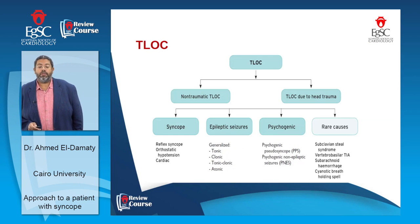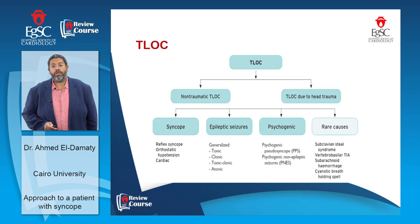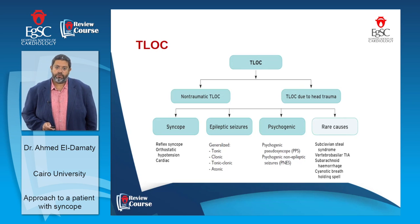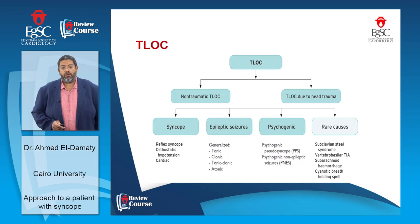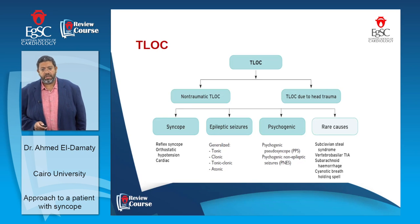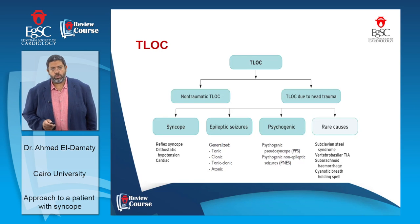To elaborate on syncope, we need to first discuss transient loss of consciousness. Transient loss of consciousness can be categorized into non-traumatic and traumatic types. In our context, we're more interested in non-traumatic transient loss of consciousness, which includes syncope, epileptic seizures, psychogenic pseudosyncope, and rare causes including subclavian steal, vertebrovascular insufficiency, and subarachnoid hemorrhages.